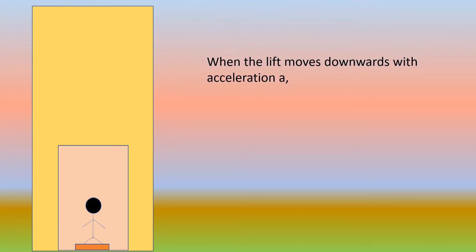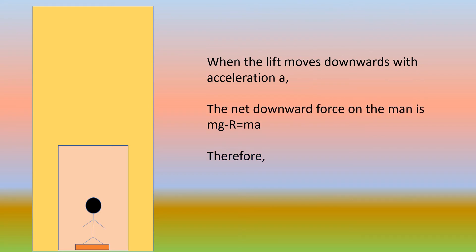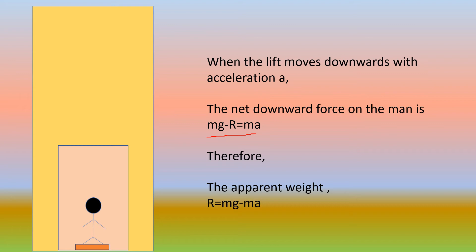Now when the lift moves downwards with an acceleration A, the net downward force on the man will be Mg minus R equal to MA. That is, the apparent weight R is equal to Mg minus MA. Taking R to the right side and MA to the left, we get R equal to Mg minus MA.